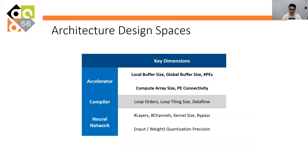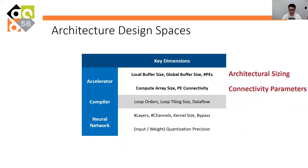We first look into the Accelerator Architecture Design Space. It can be categorized into two classes: architectural sizing, such as the number of PEs and buffer size, and connectivity parameters, such as array dimensions and inter-PE connections. Existing frameworks usually focus on architectural sizing, which are numerical values and can be easily embedded into vectors. On the other hand, PE connectivity is difficult to encode as vectors. Moreover, changing the connectivity requires redesigning the compiler mapping strategies. Therefore, our first step is to search Accelerator Design and compiler mapping at the same time.